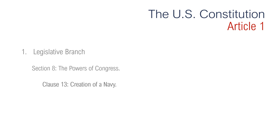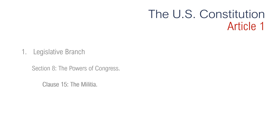Section 8, Clause 13 is regarding the creation of a navy — it allows for the maintenance of a navy. And in 1947, Congress created the United States Air Force. Section 8, Clause 14 is regarding the regulation of the armed forces. It says that Congress sets the rules for the military, mainly by way of the Uniform Code of Military Justice, which was enacted in 1950 by Congress. Clause 15 is about the militia, known today as the National Guard. Both Congress and the president have the authority to call the National Guard into federal service.